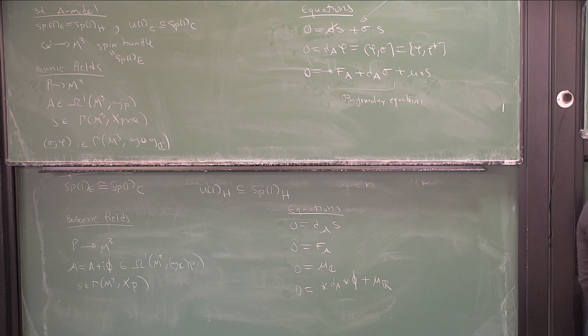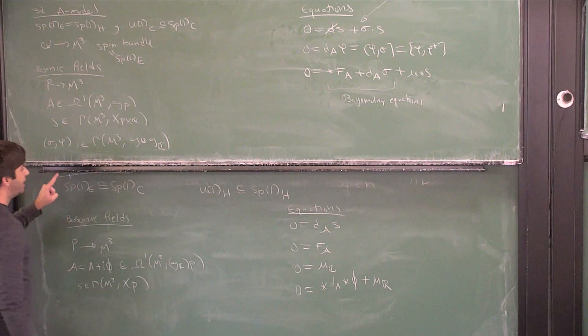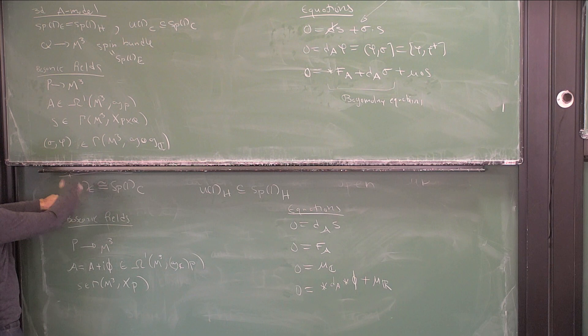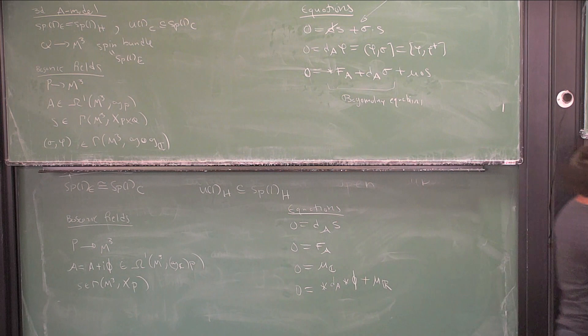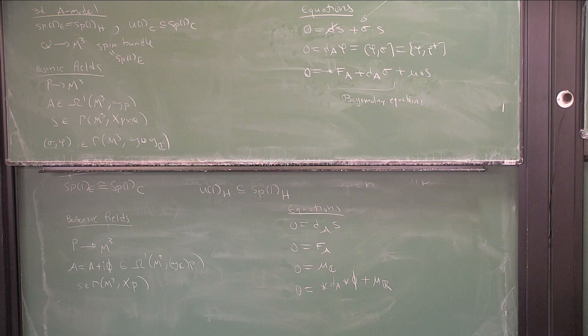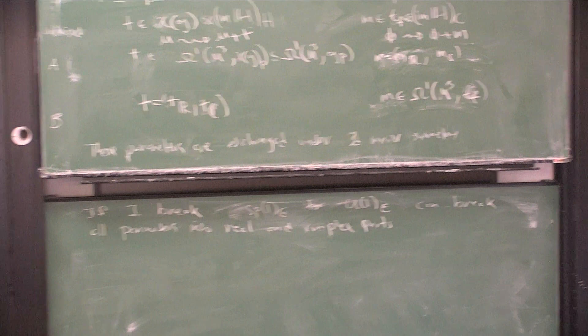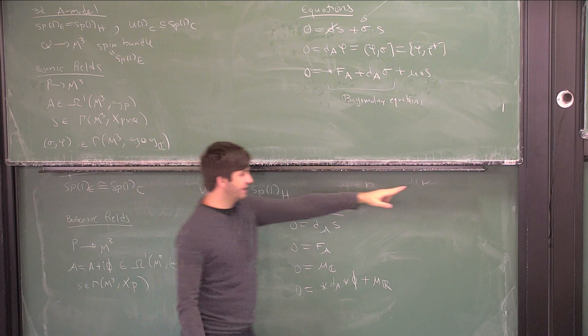One nice thing to do: if you're in a mirror symmetry situation, you've chosen a U(1) inside Sp(1)_H and a U(1) inside Sp(1)_C, and then you've identified Sp(1)_C and Sp(1)_H with the Euclidean one. So it's nice to break your Sp(1)_Euclidean to a U(1) and then break all your parameters into real and complex parts in both twists. This gives a little bit of extra data — in the A-twist you didn't have any distinguished complex structure on X, but once you break this down, now you do.